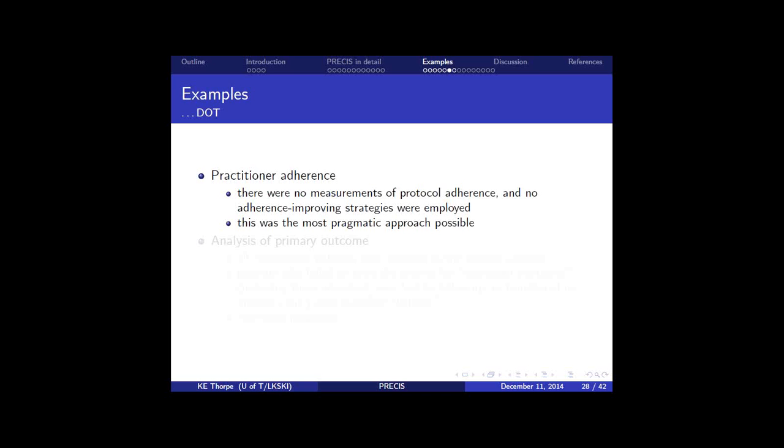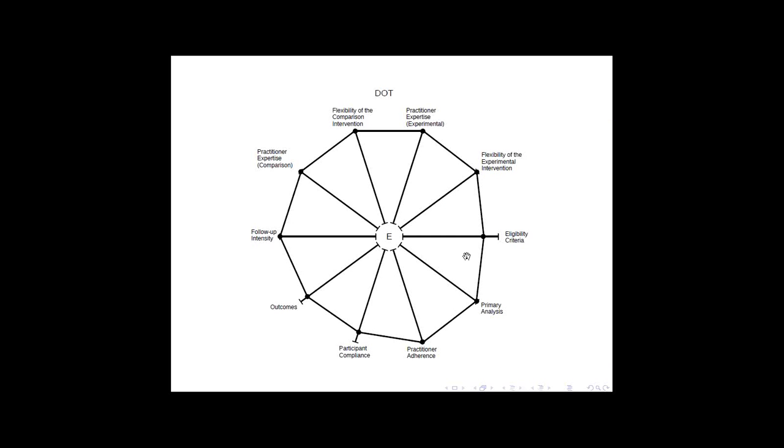And if you were to plot those elements here, this is what it might look like. So you see this pragmatic trial is represented by a very wide picture. And you can see the points where, you know, eligibility was a little bit less pragmatic because of the fewer sites involved.